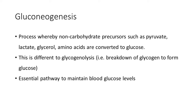Gluconeogenesis is a process whereby non-carbohydrate precursors such as pyruvate, lactate, glycerol, and amino acids are converted to glucose. Note that it is different from glycogenolysis, which is the breakdown of glycogen to form glucose. It is an essential pathway to maintain blood glucose level especially in times of starvation or fasting.